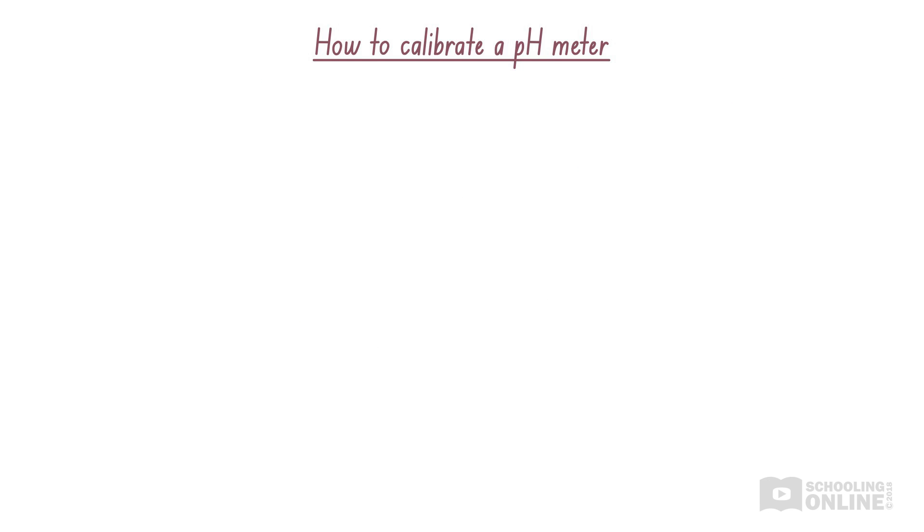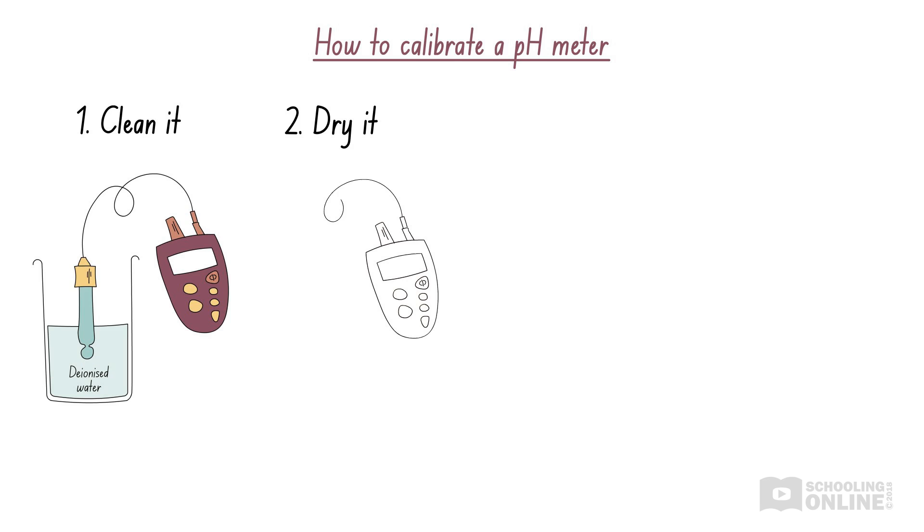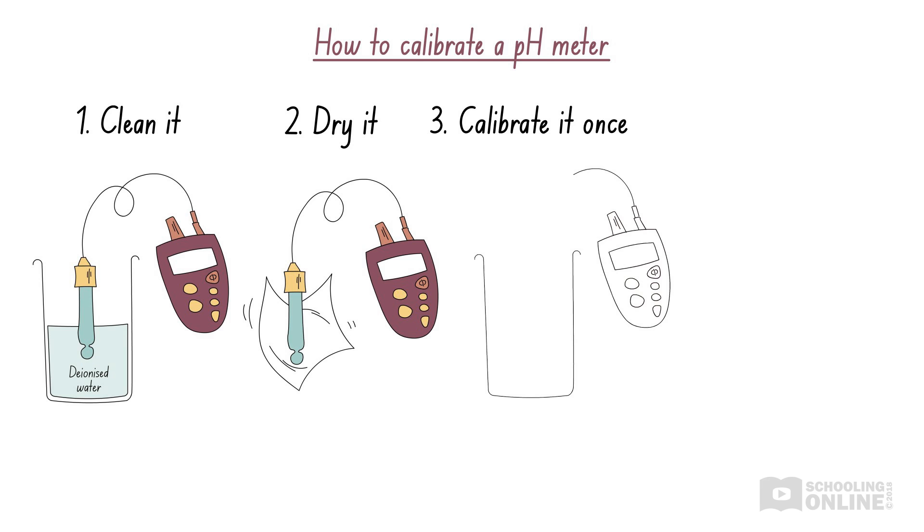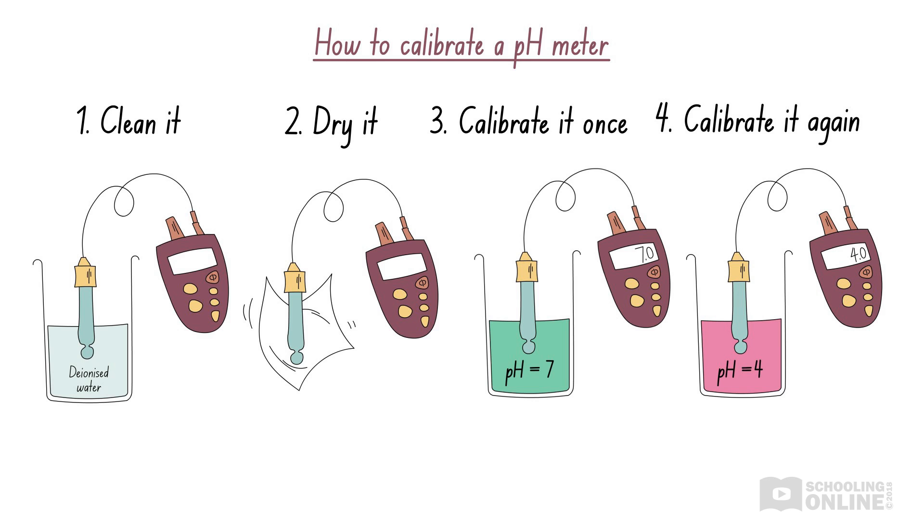To calibrate a pH meter, we should clean the electrode by rinsing it with deionized water and blotting it dry using a tissue. Then, the electrode is placed in a buffer solution of pH 7. This solution is neutral, so it is neither acidic nor basic. Next, we allow the pH reading to stabilize before we set the pH meter to read exactly 7. This process is usually repeated with a second buffer solution. For example, we could also use an acidic buffer solution with a pH of 4. After we perform the second calibration, the pH meter will correctly measure pH values ranging from 4 to 7. The pH meter is now calibrated and ready for use.